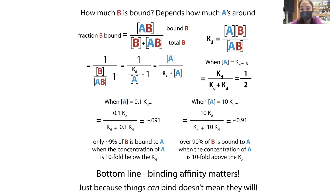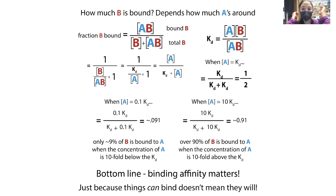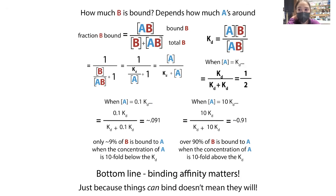In a cellular context, things can be scaffolded together, so even if a binding partner is present at low concentration, scaffolding proteins can bring them together to effectively increase the local concentration. But keep in mind that everything will have some Kd — it might just be ridiculously high. Just because things can bind doesn't mean they will under physiological conditions. If something has a very high Kd, it's probably binding to many other things before it binds your target of interest.